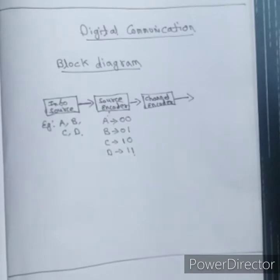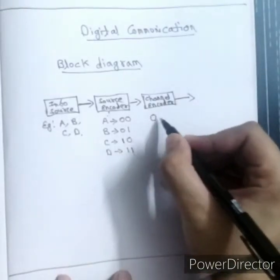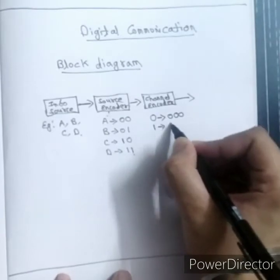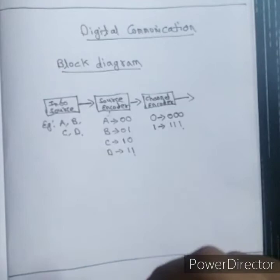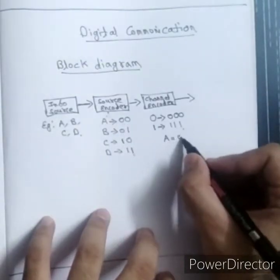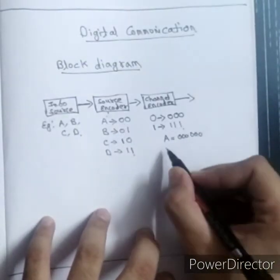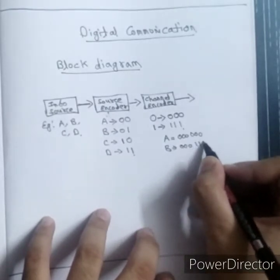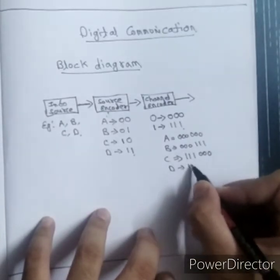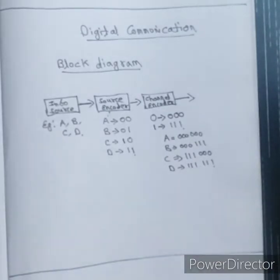One example of channel encoding is repetition codes, where every bit is repeated either two or three times. For example, using repetition codes and repeating each bit three times: A (which is 00) becomes 000 000, B (01) becomes 000 111, C (10) becomes 111 000, and D (11) becomes 111 111. This is the output of the channel encoder.